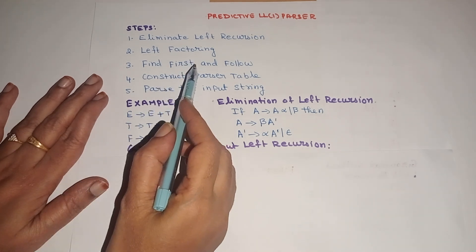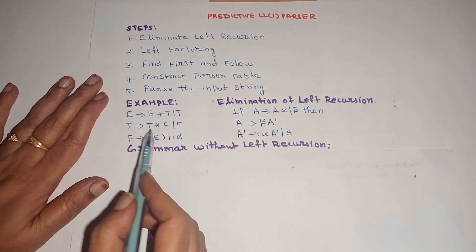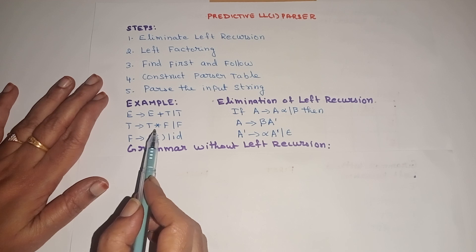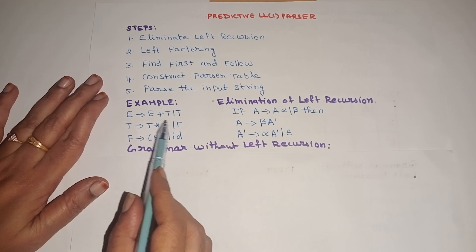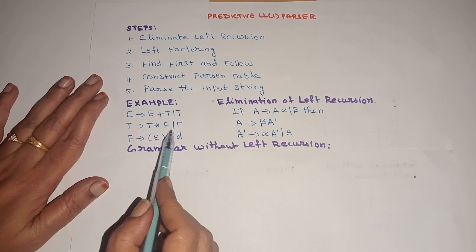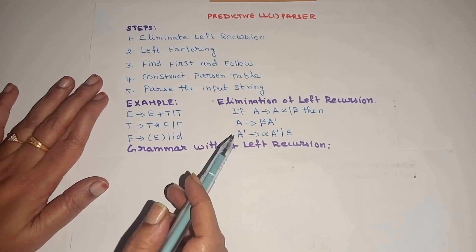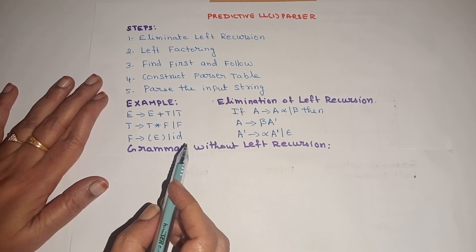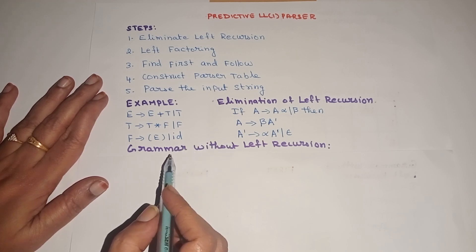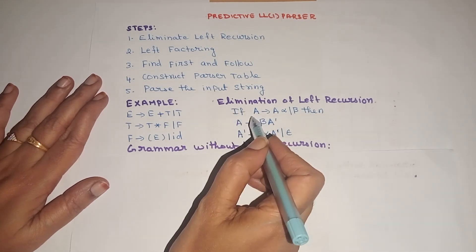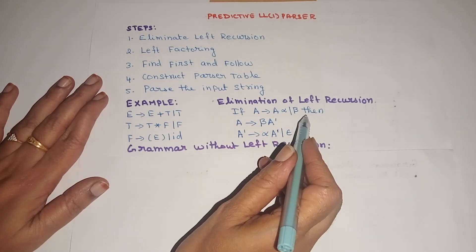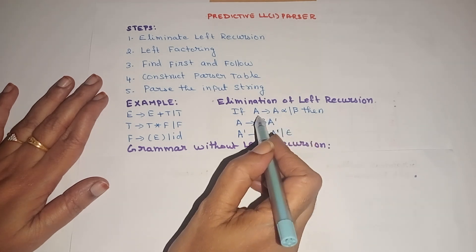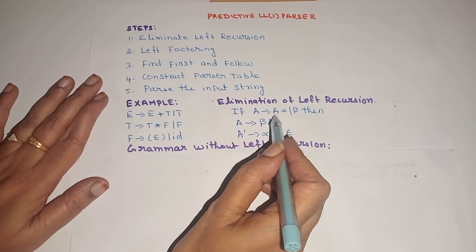Our first step is to eliminate the left recursion. Let us consider the example grammar given here: we have 3 productions — E tends to E plus T or T, T tends to T star F or F, and F tends to open parenthesis E close parenthesis or id. If the production is of the form A tends to A alpha or beta, then it is said to be left recursive. That is, if the left hand side variable is similar to the first symbol in the right hand side, then it is left recursive.